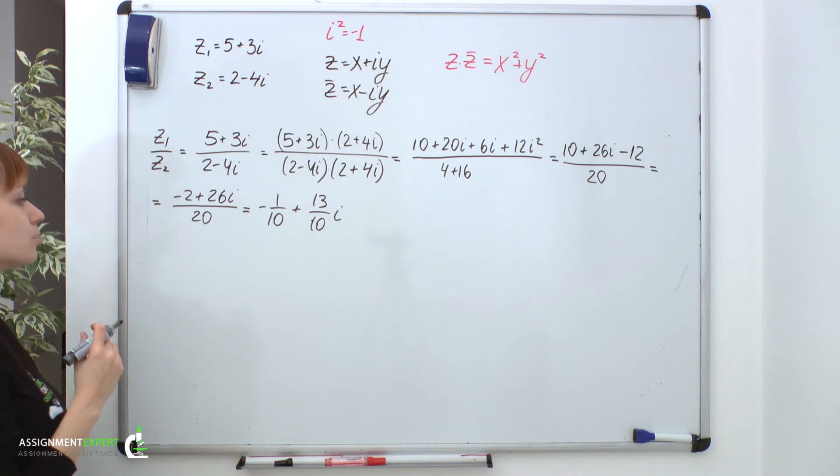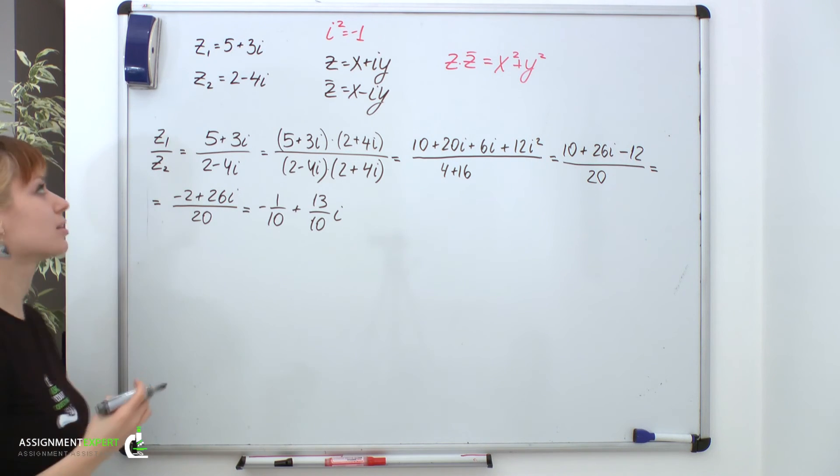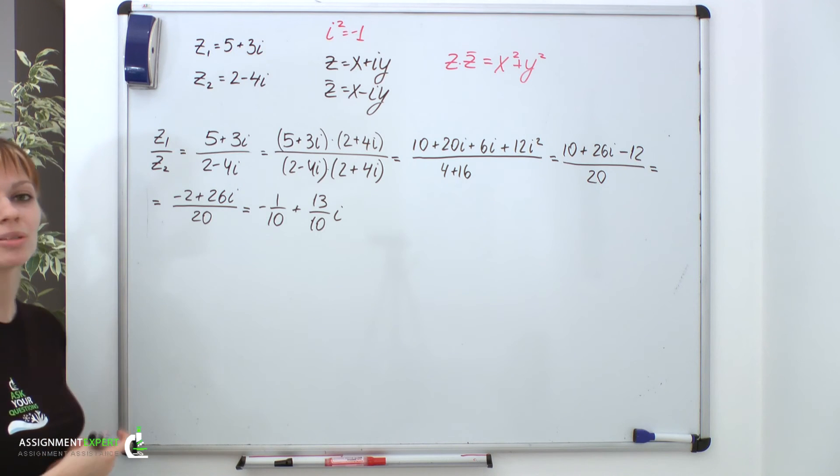Now, let's consider another example. And this time, our numbers being divided will be complex conjugates. Let's see, is there anything special about this case?